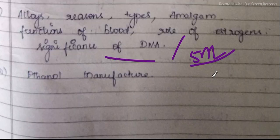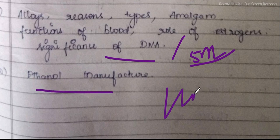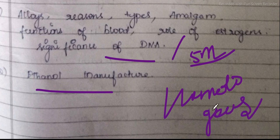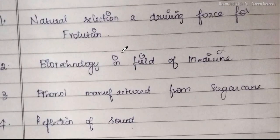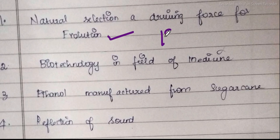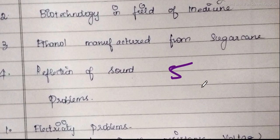Alloys: reason for alloying, types of alloys, amalgam. Functions of blood, role of estrogen, significance of DNA, corrosion, preventive measures of corrosion — these are all 5-mark topics, and all these have chances of being 7 marks. Ethanol manufacture plus homologous series are also 5-mark topics. Natural selection and driving force for evolution — 19th lesson, origin and evolution of life. Biotechnology field of medicine — 21st lesson.